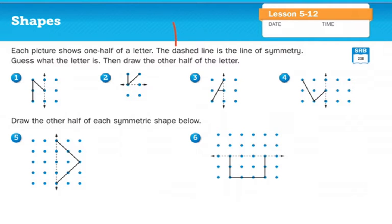Go ahead and open up your math journal to page 184. At the top it says shapes. Each picture shows one half of a letter. The dash line is the line of symmetry. Guess what the letter is. Then draw the other half of the letter. So what letter is number one, everyone? M.